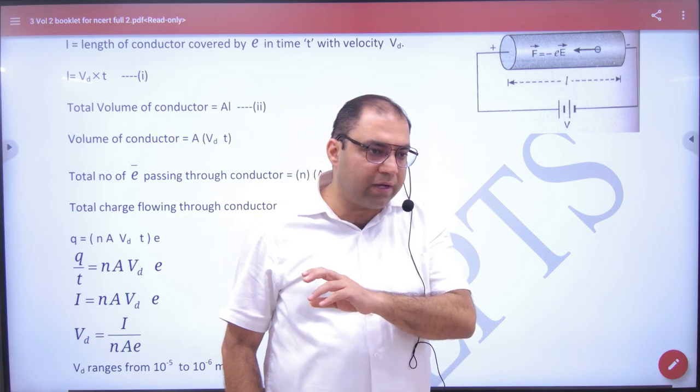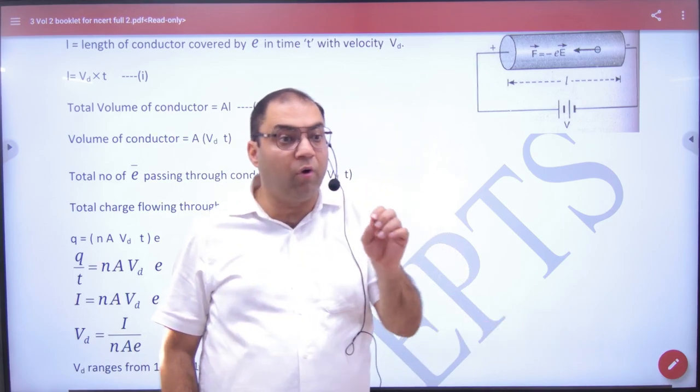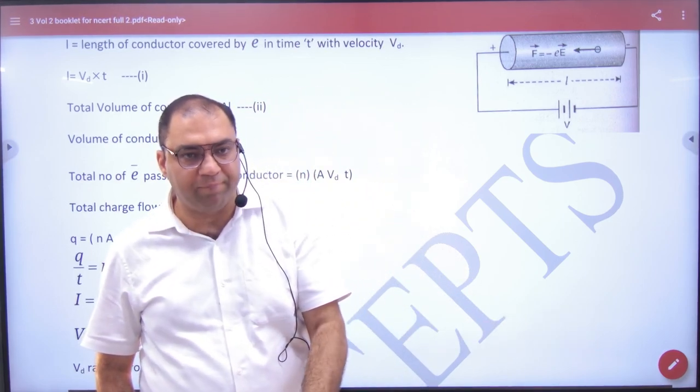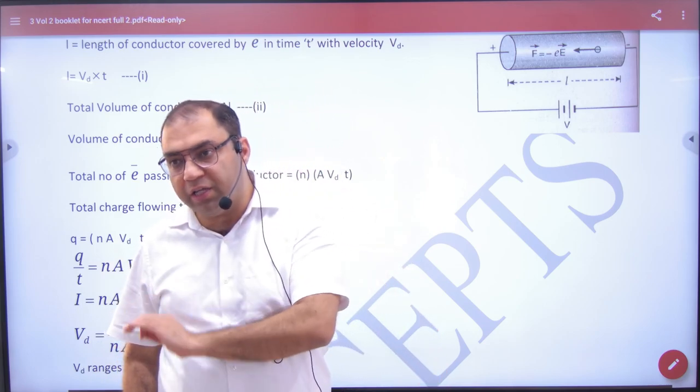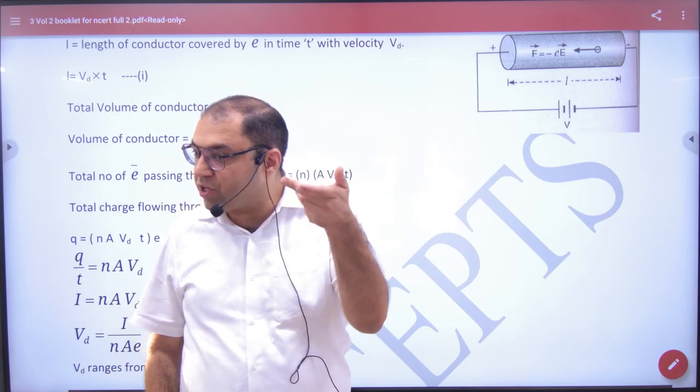When electrons move in the wire, when current moves, electron speed is very slow, drift is very slow. But the question is, if drift speed is so slow, how does large current get generated?